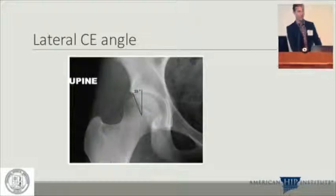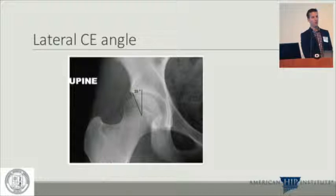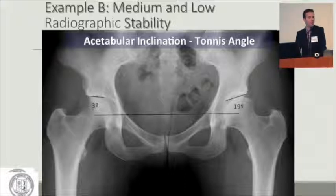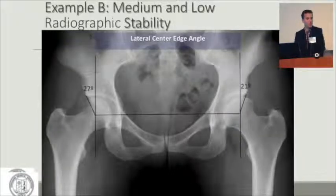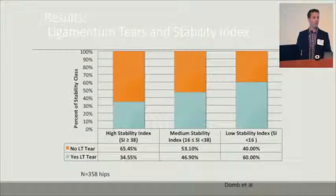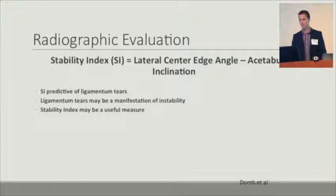The lateral center edge angle — normal is about 25 degrees; 20–25 degrees is borderline dysplasia; under 15 is dysplasia. There's another way to look at this from Filman and Pötzer's study: they take the Tönnis angle and the lateral center edge angle, and subtract the Tönnis angle from acetabular inclination to get a stability index — for example, 21 minus 3. They correlated this with intraoperative findings and showed a higher rate of ligament of teres tears in patients with a low stability index, meaning a high Tönnis angle and a low center edge angle.